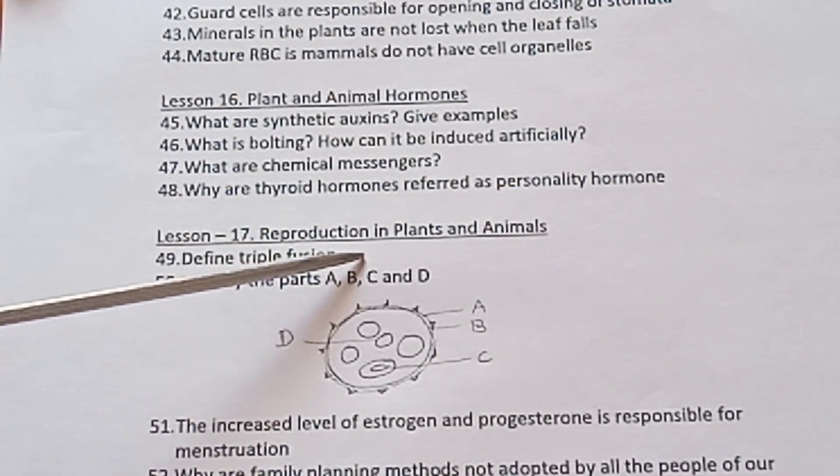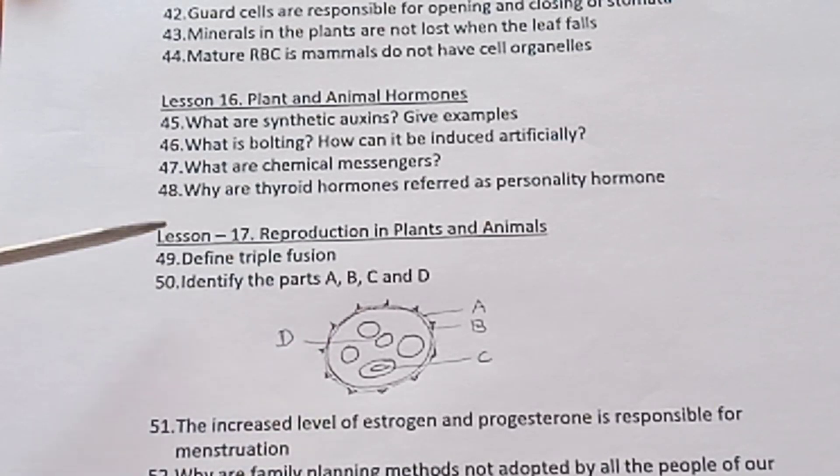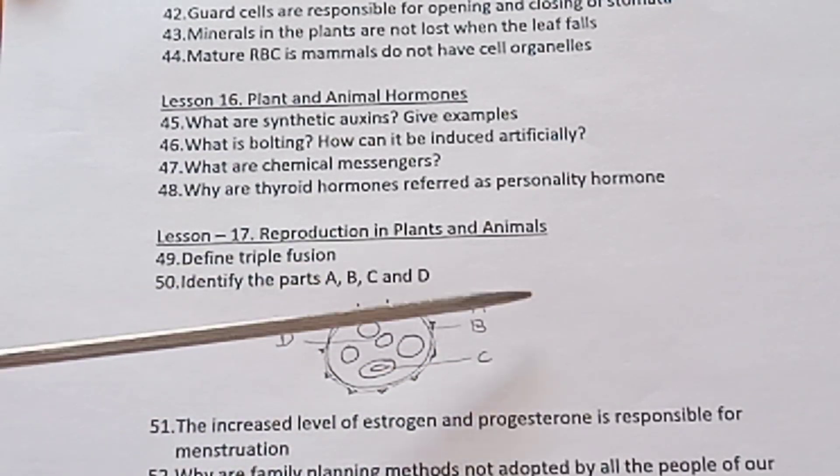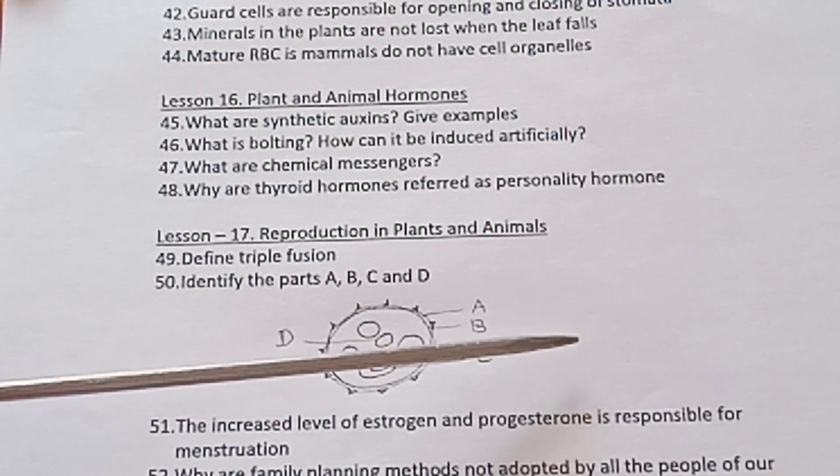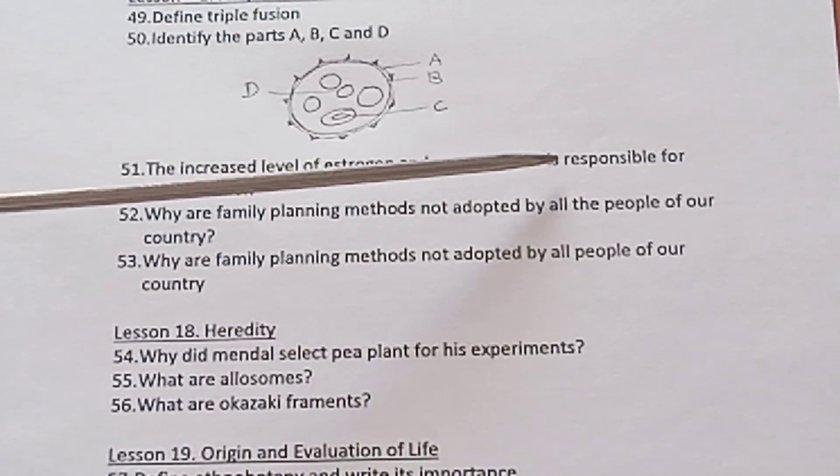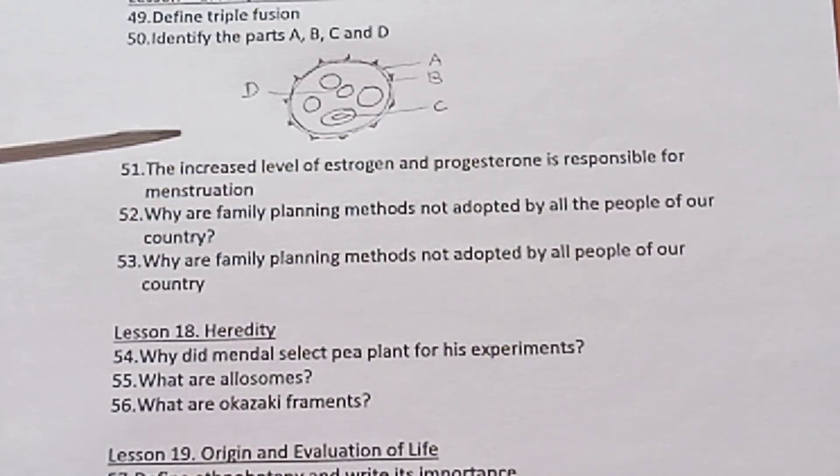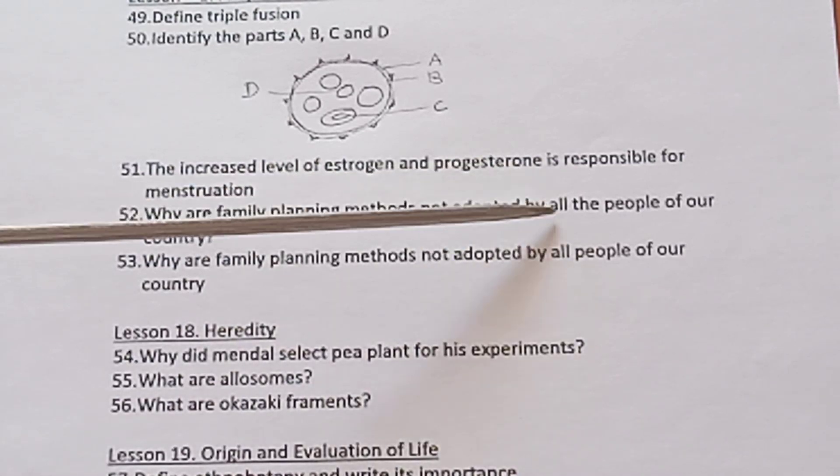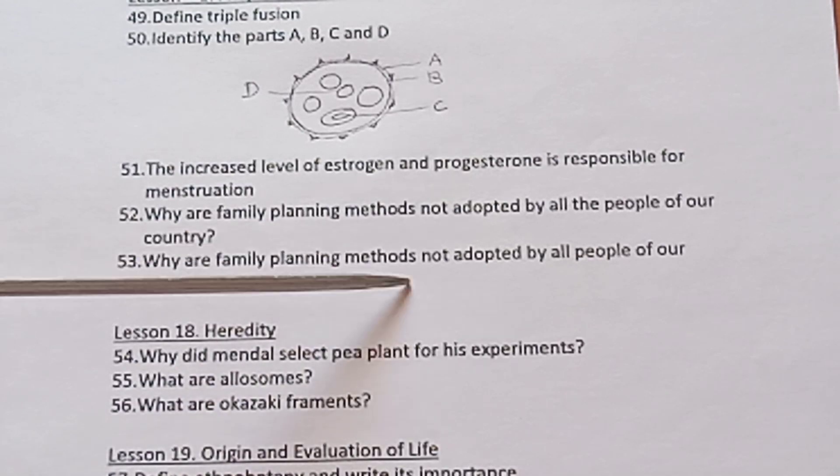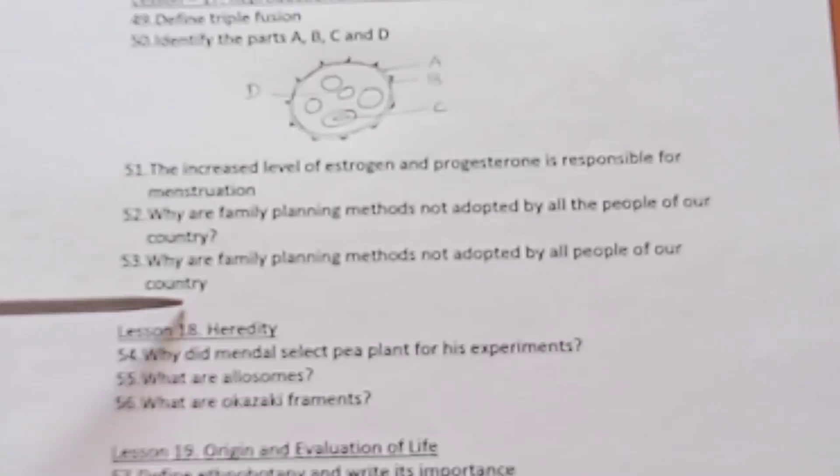Lesson 17 Reproduction in Plants and Animals. Define triple fusion. Identify the parts A, B, C, D. One very important diagram. First you have to draw the diagram A, B, C, D. You have to write down separately what is A, what is B, what is C, what is D. The increased level of estrogen and progesterone is responsible for menstruation. Why are family planning methods not adopted by all the people of our country? Why are family planning methods not adopted by all people of our country?